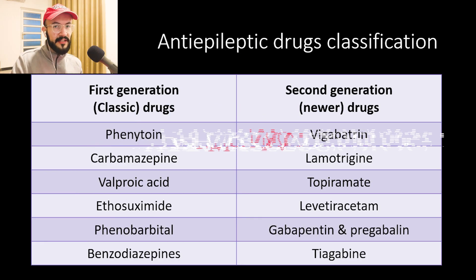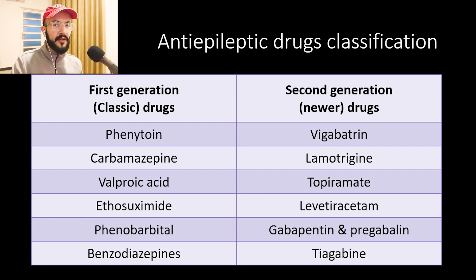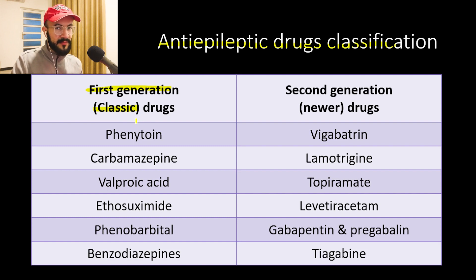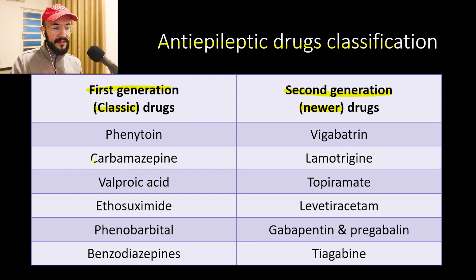Previously in the CNS Pharmacology Masterclass, we talked about the anti-epileptic drugs classification. We mentioned that the anti-epileptics are classified into the first generation anti-epileptics, which are also called the classic or older anti-epileptics, and the second generation anti-epileptic drugs, which are also called the newer anti-epileptics. Carbamazepine, which is our topic of today, is included in the first generation of the anti-epileptics.